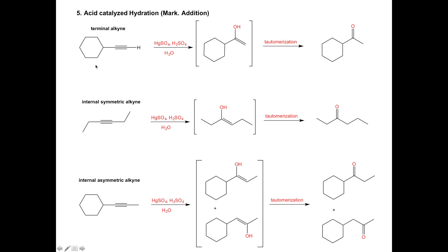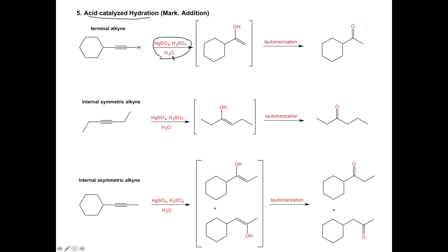Our fifth reaction is acid-catalyzed hydration. With alkynes, this is harder to do just using acid, so it's really a combination of oxymercuration and acid-catalyzed hydration. The reagents to run this reaction are HgSO4, H2SO4, and water. These conditions add water across our double bond with Markovnikov addition, adding OH to the Markovnikov position. In our terminal alkyne, the carbon on the right has one hydrogen and the carbon on the left has none — so that's clearly our Markovnikov position.